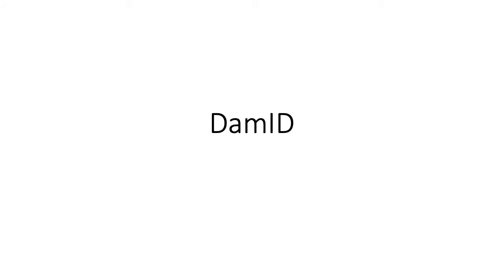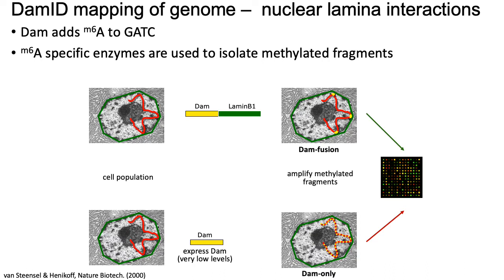Let's dive a little bit deeper into the DAMID technology. In the DAMID assay, you run a pair of experiments. In the first experiment, you create a fusion protein between DAM and lamin B1. What's going to happen is that all of the adenines within a GATC motif that are also residing near the nuclear lamina, where the lamin B1 protein resides, are going to get methylated.